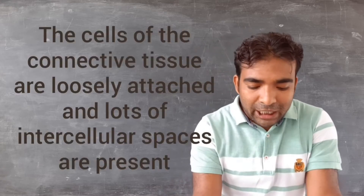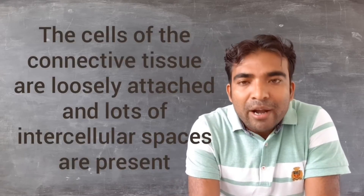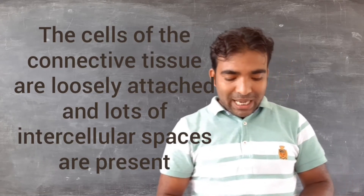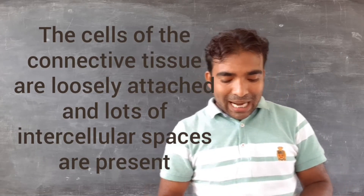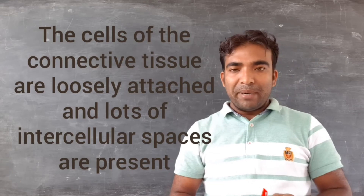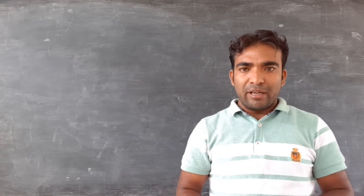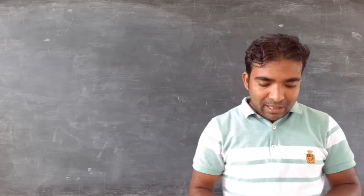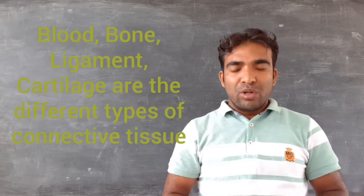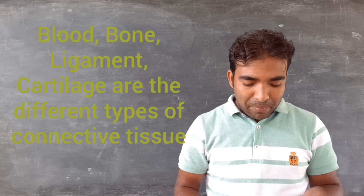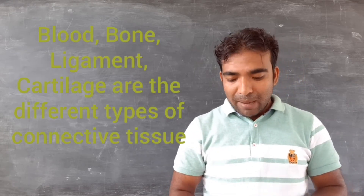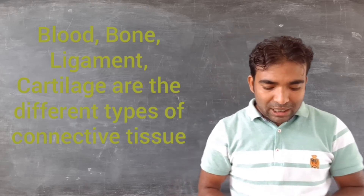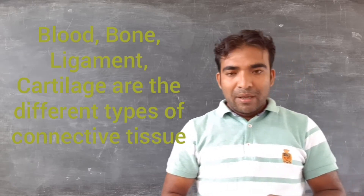Now we will discuss about the second type, that is connective tissue. The cells of connective tissue are loosely attached and embedded in an intercellular matrix. The matrix may be jelly-type or a fluid substance. There are different types of connective tissue, for example blood, bone, ligament, and cartilage.